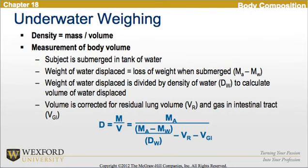More specifically, discussing underwater weighing, the density is equal to mass over volume. Body volume is measured by submerging the subject in a tank of water. The weight of the water displaced equals the loss of weight when submerged. The weight of water displaced is divided by the density of water to calculate the volume of water displaced. The volume is then corrected for residual lung volume and gas in the GI tract. Here is a diagram of the underwater weighing technique.